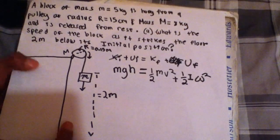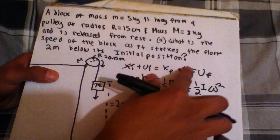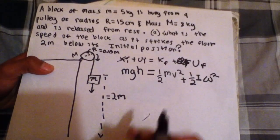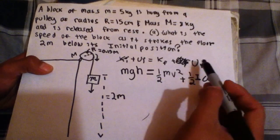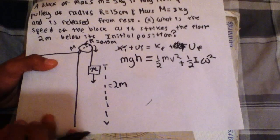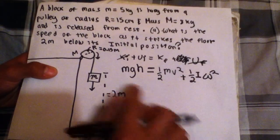And then since it's asking for the speed of the block when it strikes the floor, that's gonna be zero. The height equals zero. So then if the height equals zero relative to the ground, then this goes away. So we're left with this.